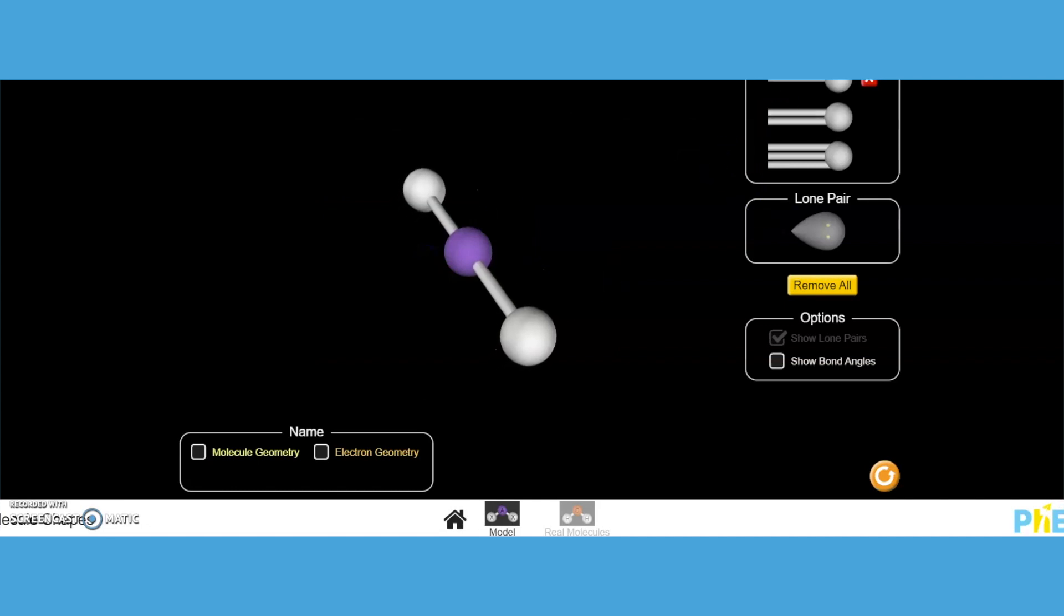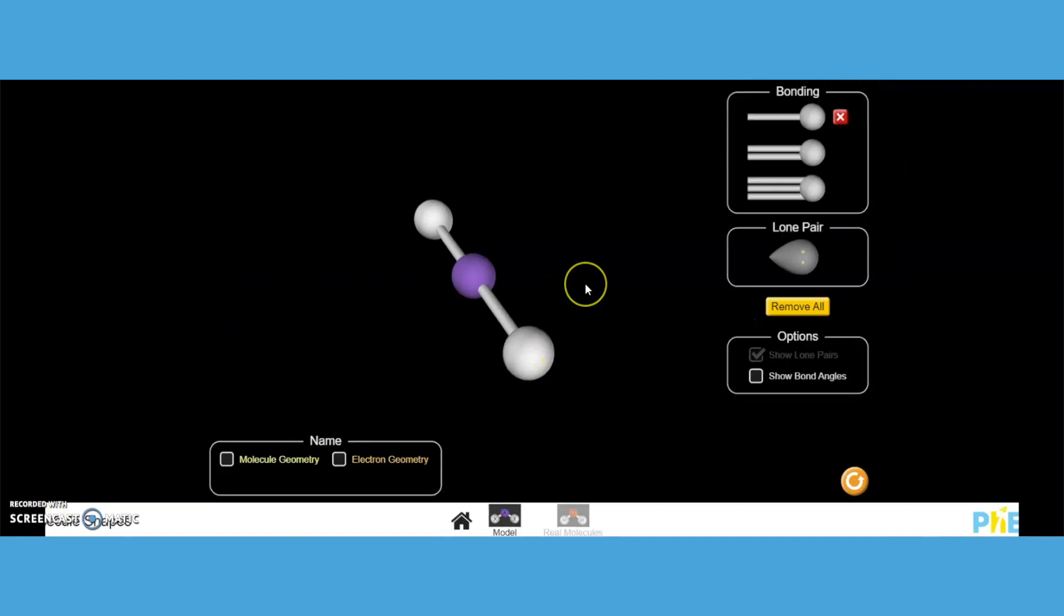Here's what the students see when they're on the model series. Have them check molecular geometry, electron geometry to compare and contrast the electron domains. I would also have them show bond angles, so they're practicing looking at their molecular geometry, their electron geometry, and the bond angle at that moment.